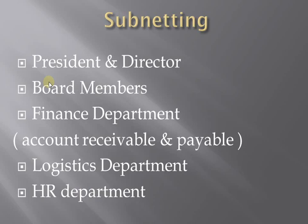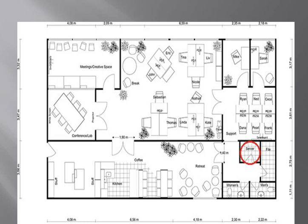Subnetting — it depends on the size of the company. Definitely there could be the president, directors, members of the board, the financial department, accounts receivable and payable, logistics, HR, engineering department — all of them. So let's think of the plan.